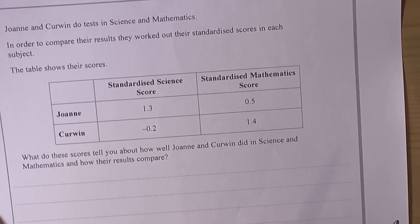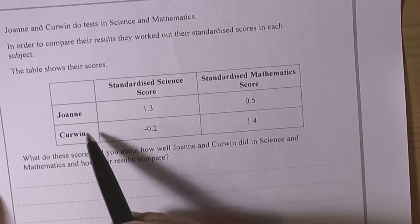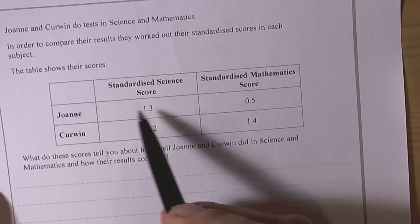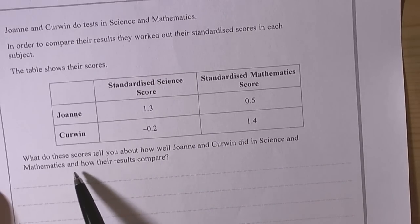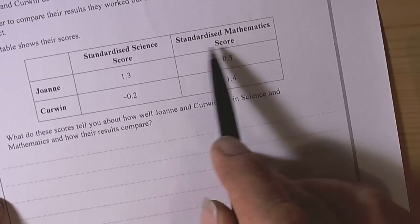So an example of using standardized scores to compare two different variables, in this case two different people, Joanne and Kerwin, and their scores in the maths and science tests, and we're going to say something about what the scores tell you about their performances.